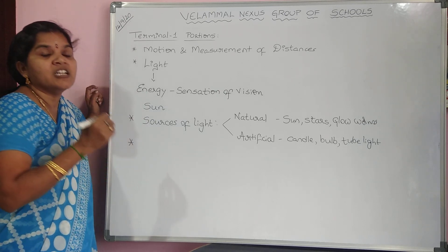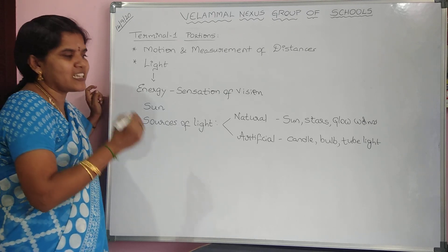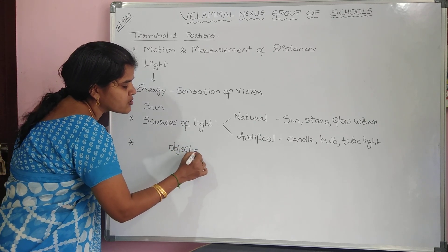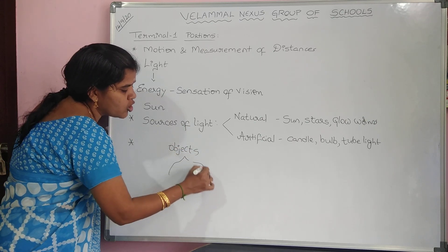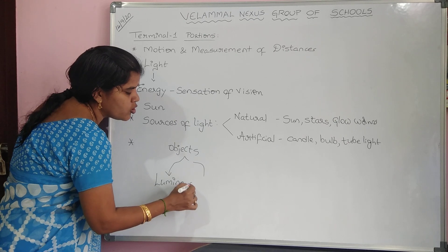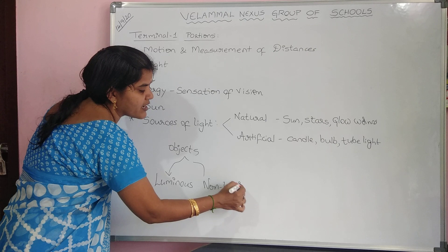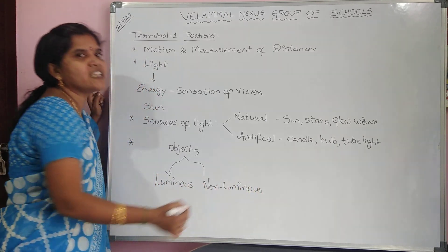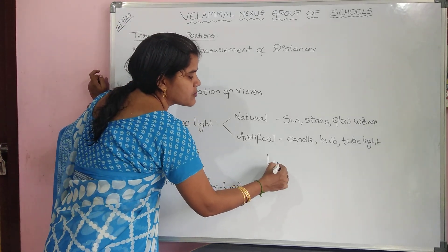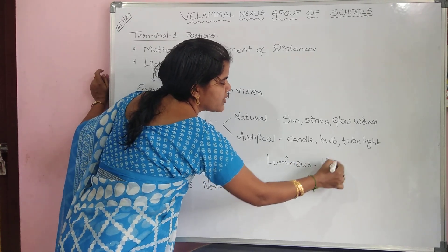Next, there is another division depending upon whether a substance gives out light on its own or not. That category classifies objects into luminous objects and non-luminous objects. Luminous objects are nothing but objects which give out light on their own.